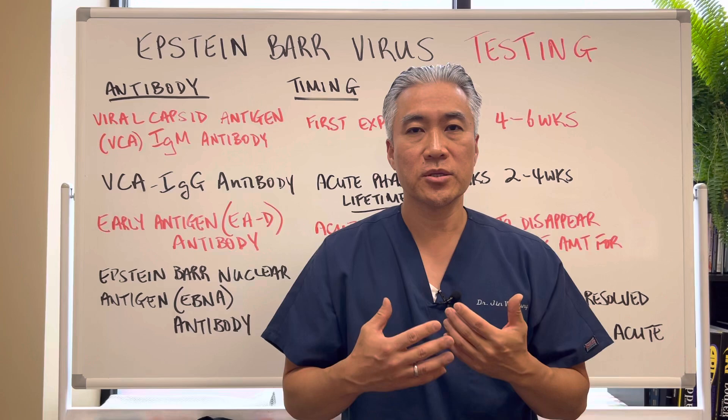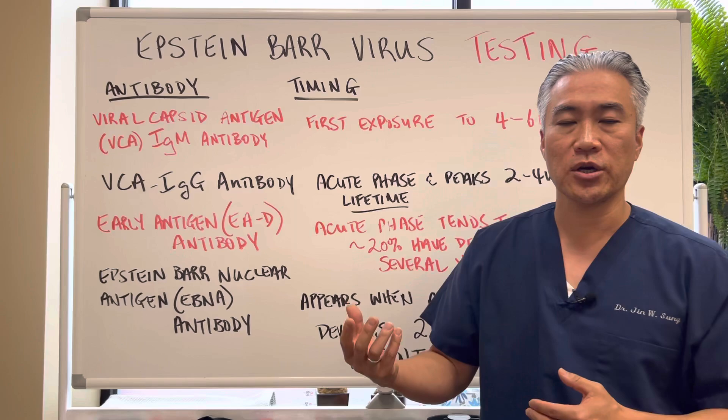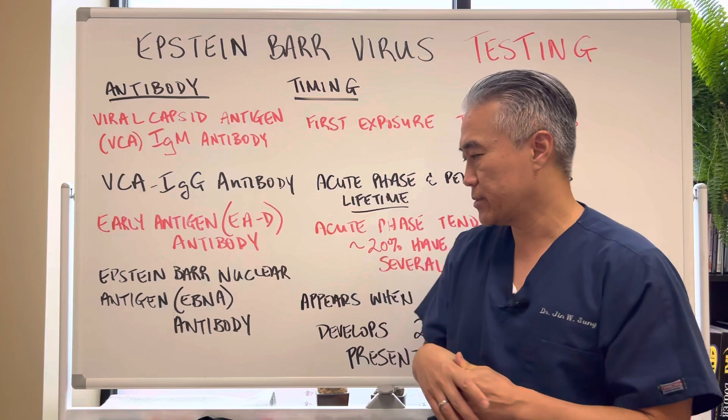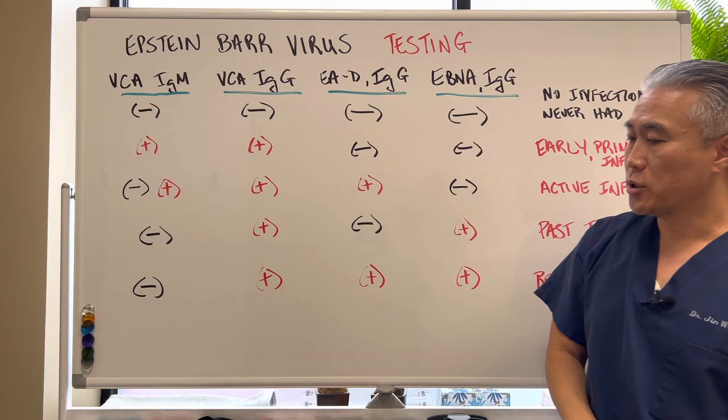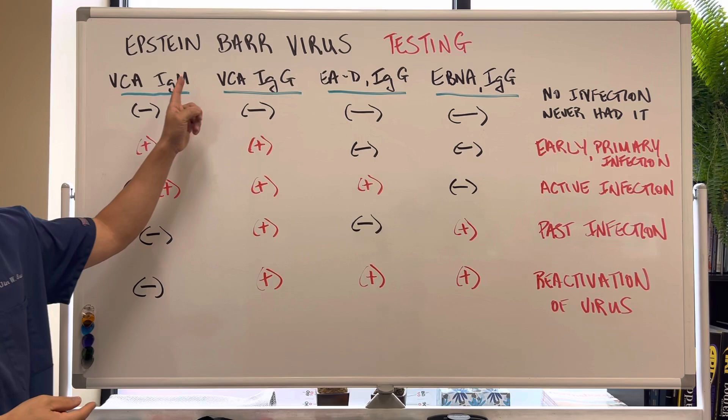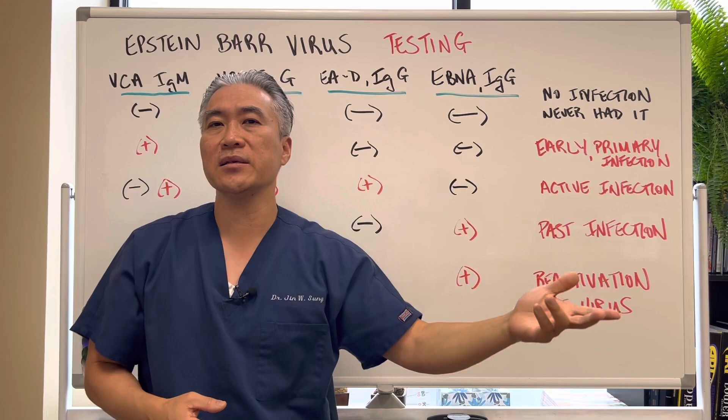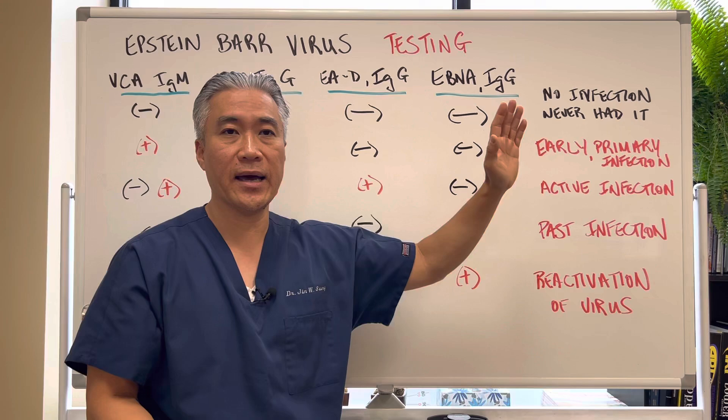So how do we determine if we have an acute infection, a past infection, or a reactivation of the virus? If we test a patient and they're negative for all of them, that means that person has never had the infection and doesn't have any acute infection — they've never had it, and they're susceptible to getting Epstein-Barr.